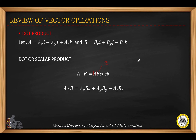Theta is the angle between the two vectors. So if this is vector A and vector B, theta is the angle between A and B. Another way of computing the dot product is by taking the sum of the products of the respective components.